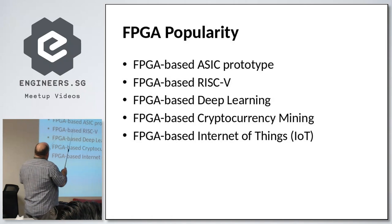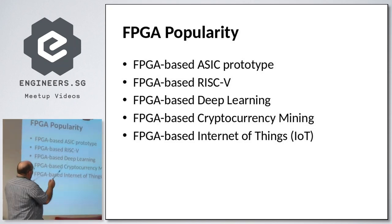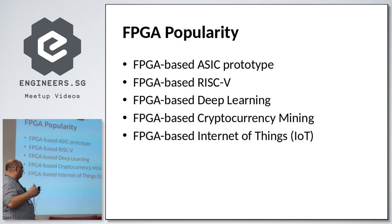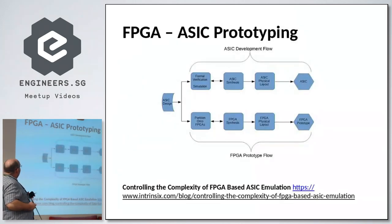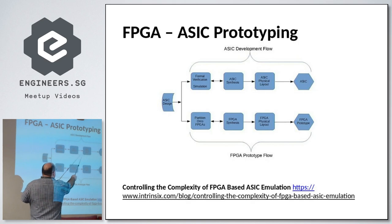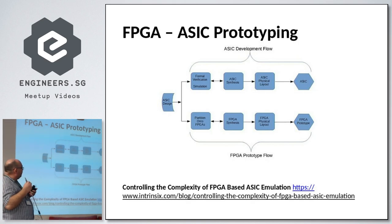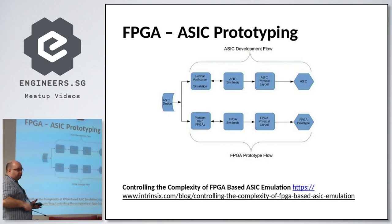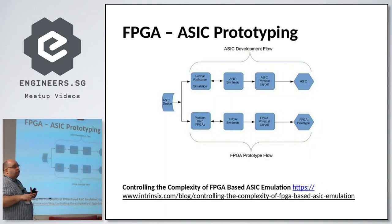FPGA is becoming more and more popular. The first thing is it's used to prototype ASICs. There are several topics becoming very popular: RISC-V, deep learning, cryptocurrency mining, and IoT for the low-power aspect. For ASIC prototyping, the verification and synthesis are similar, but physically an ASIC looks at gate level while the FPGA has pre-built blocks. You use FPGA development to prototype before ultimately making the ASIC. An ASIC will use less power and clock faster than the FPGA, so it's the preparation for that.